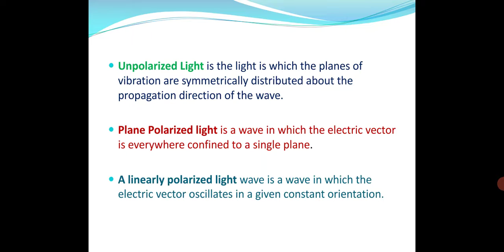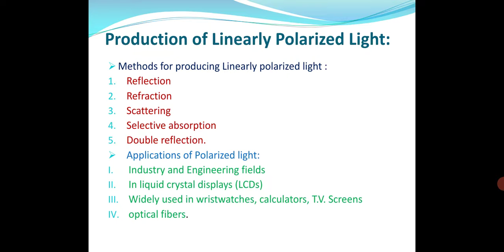Unpolarized light is the light in which planes of vibrations are symmetrically distributed about the propagation direction. In plane polarized light, the vibrations of the particles are only in one plane — that is, the wave in which the electric vector is everywhere confined to a single plane. Linearly polarized waves are waves in which the electric vector oscillates in a given constant orientation. Methods for producing linearly polarized light include reflection, refraction, scattering, selective absorption, and double refraction.